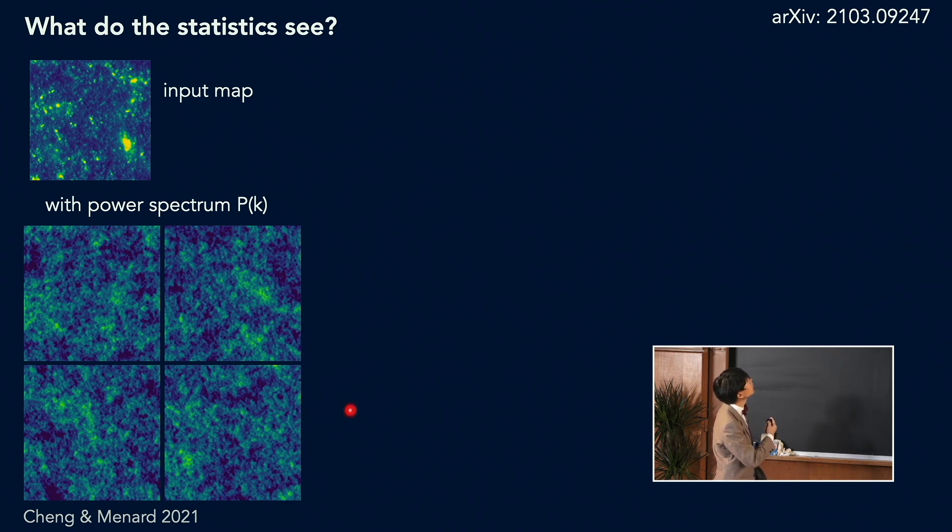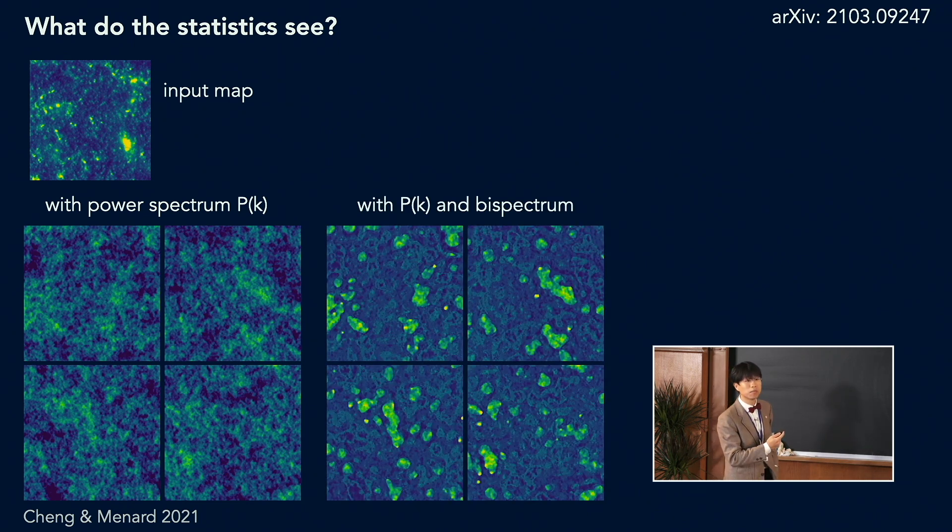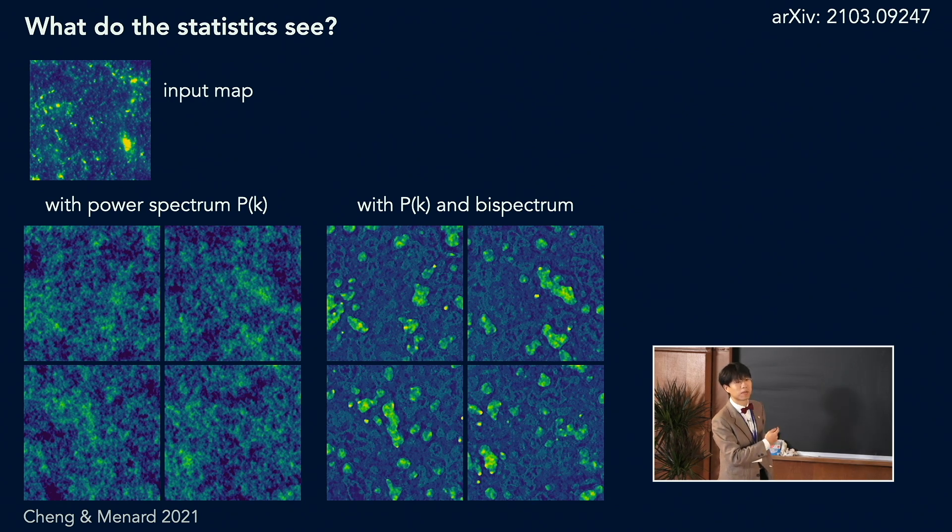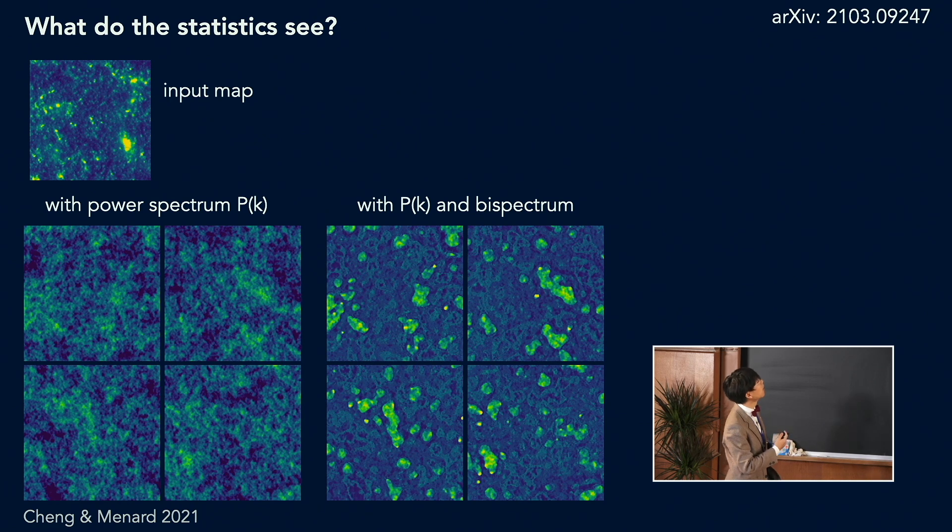So if you play this trick with the power spectrum, we get some Gaussian texture, that's expected. If you add the bi-spectrum, the result improved a lot, but still is far from the input texture. So by the way, I think for many of you, this might be the first time you see a visualization of a bi-spectrum.